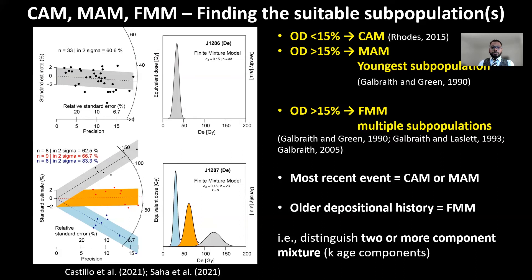The minimum age model explicitly assumes that the youngest subpopulation represents the most recent depositional history, which is useful for dating paleo seismic events. We also assume that the older subpopulation likely did not see sunlight and hence retained its past depositional history. If that assumption is true, we can utilize the youngest subpopulations for the most recent history, and the older finite mixture model subpopulations to extract additional depositional history.